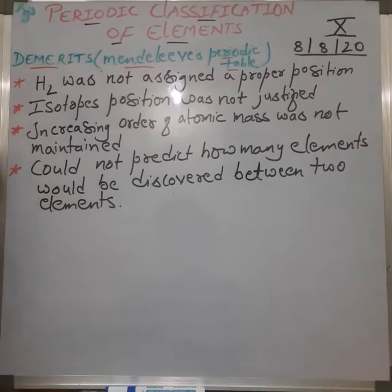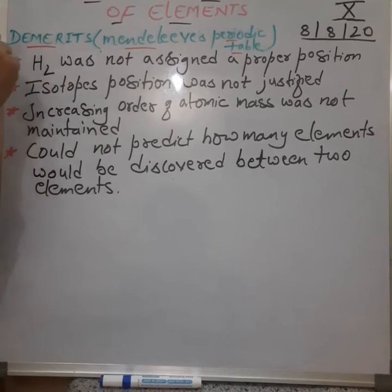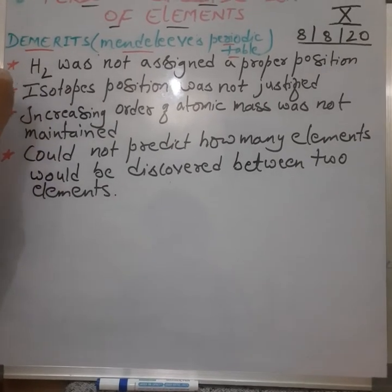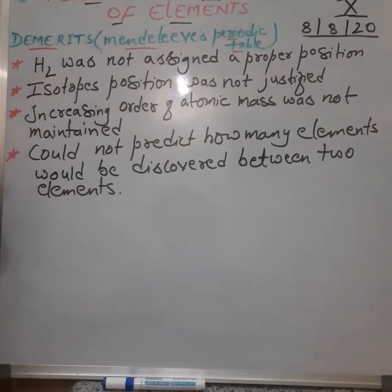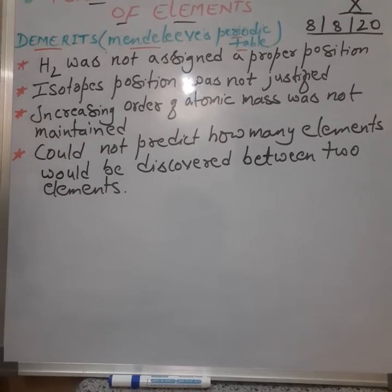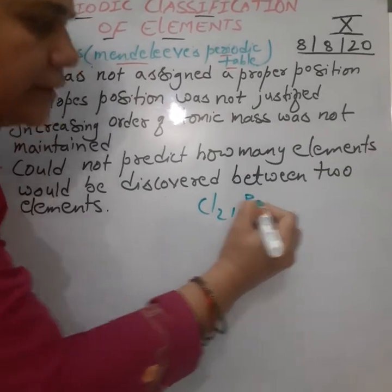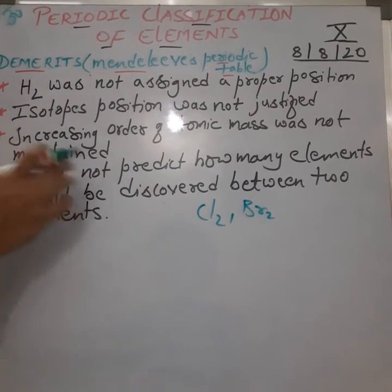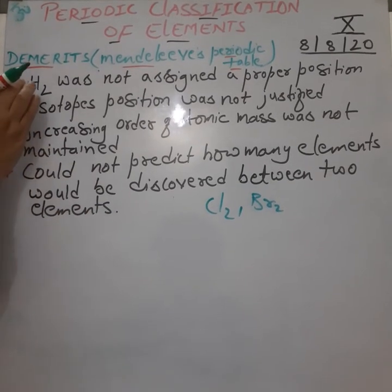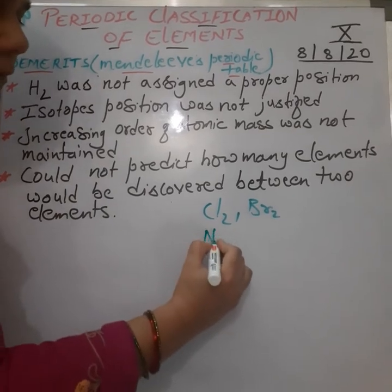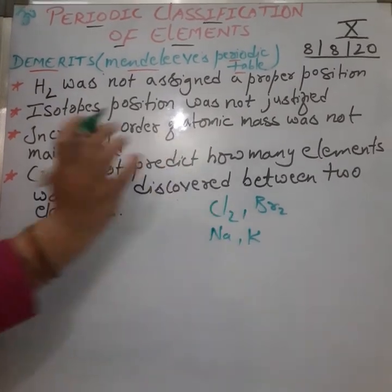The first drawback was that hydrogen was not assigned a proper position. As per the increasing order of atomic mass, Mendeleev positioned it in the first period, first group. But when it comes to chemical and physical properties, hydrogen is similar to halogens — chlorine, fluorine — which exist in molecular state. Just as Cl2, Br2, hydrogen also exists as H2 in molecular state, and it is gaseous and non-metallic by nature.